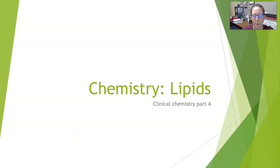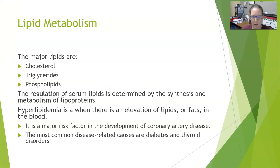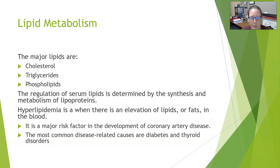Hi guys, Dr. A with Basics of Chemistry. We're going to look at the lipids. Let's start with lipid metabolism. The major lipids are cholesterol, triglycerides, and phospholipids. Cholesterol is the building block of many fat-soluble hormones — cortisol, steroid-type hormones, estrogen, testosterone, progesterone, pregnenolone — all of those hormones are built from cholesterol.